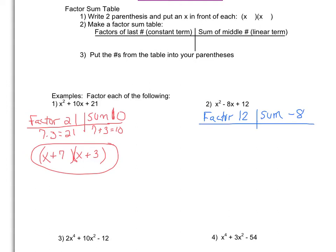When I think of two things that multiply to be 12, maybe I think 3 times 4. However, when I do 3 plus 4, I do not get -8. So that did not work. I have to try something else.